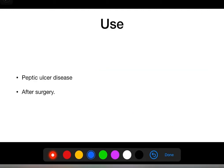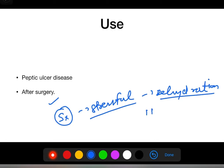What is the use? Peptic ulcer disease and after surgery. Why after surgery? Because surgery is a stressful condition. There is already dehydration in the patient, and because of that stressful condition, HCl secretion increases.